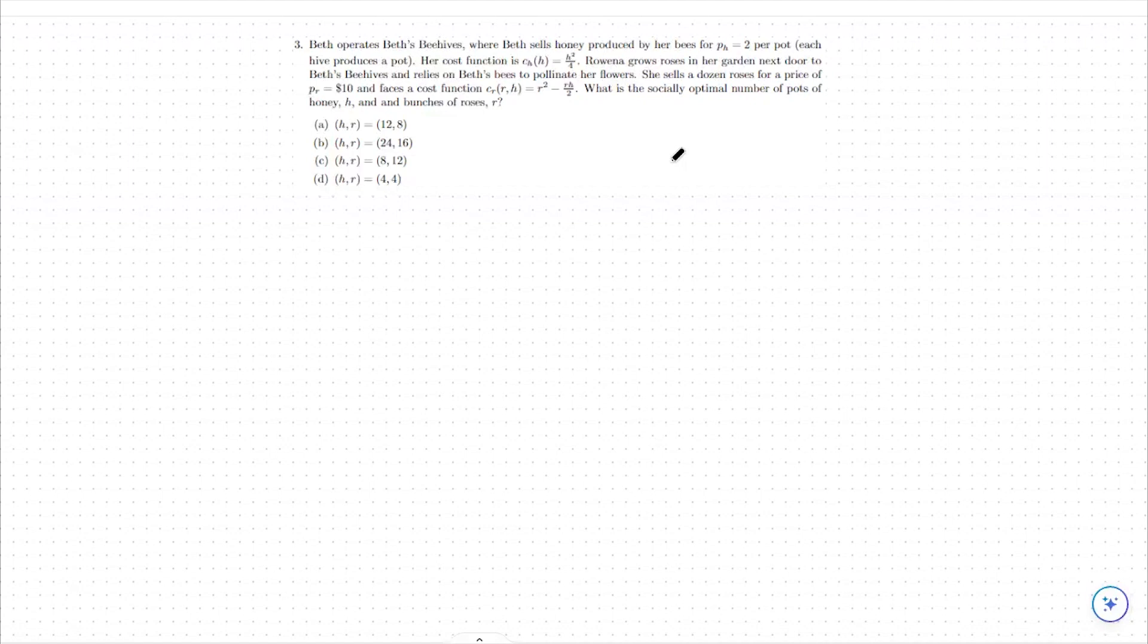Production is not the only type of externality that we could see, though. Any agent in the economy or in civilization in general can produce externalities both positive and negative. A negative externality that any agent could do, think about if you played your guitar too loud too late at night, you're producing a negative externality for your neighbors.